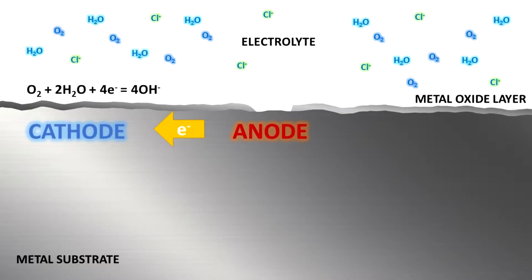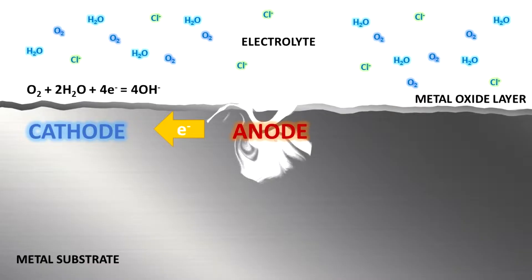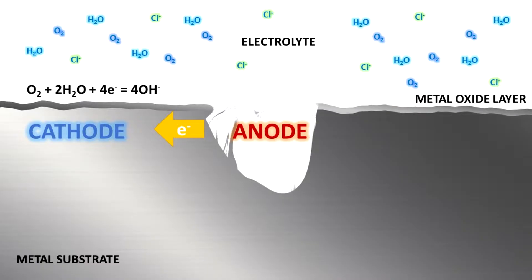In the second stage, a localized corrosion cell forms within the pit. The pit acts as an anode, while the surrounding area acts as a cathode. At the anode, metal atoms lose electrons, leading to the formation of metal ions. At the cathode, reduction reactions occur. Oxygen reduction is typically the dominant cathodic reaction in the presence of dissolved oxygen.